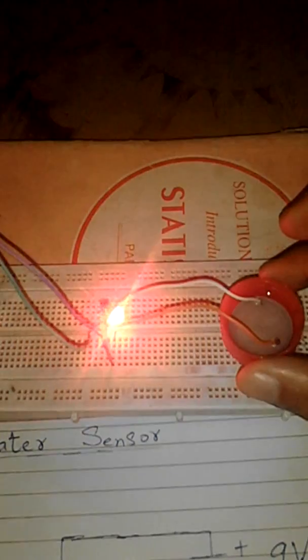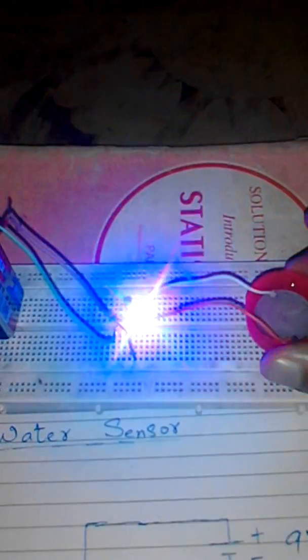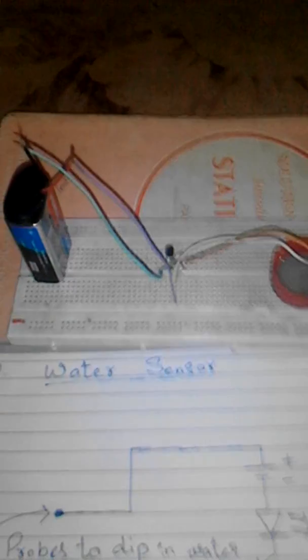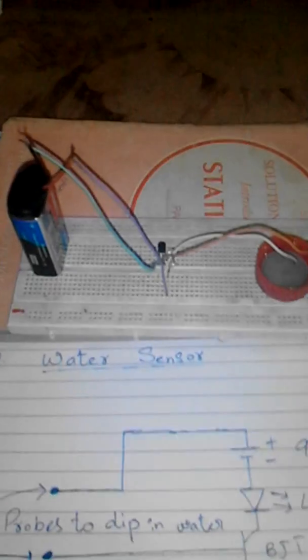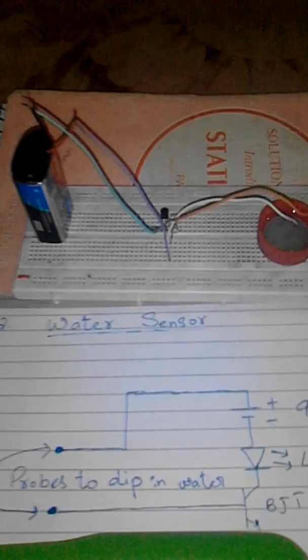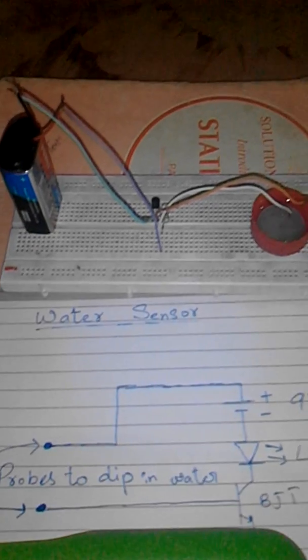Now LED is switch off, again LED switch off. This is the simple basic circuit diagram of water sensor, easy to use, cheap and easy to make.